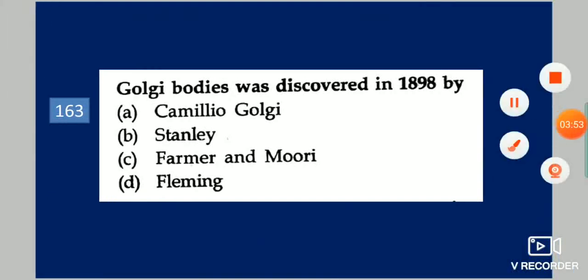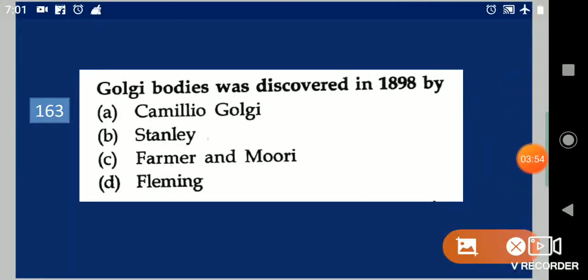Next question: Golgi bodies were discovered in 1898 by dash. Your options are: Camillo Golgi, Stanley, Farmer and Murray, Fleming. Your answer is Camillo Golgi.